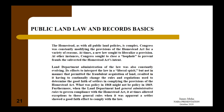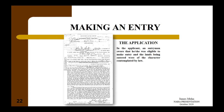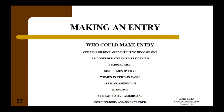In making an entry, the first thing an individual had to do was make an application, swearing that he or she was eligible and that the lands being entered were of the character contemplated by law. Who could make entry? You had to be a citizen or have declared intent to become one. Ex-Confederates were initially denied but later allowed. Married men of any age could make entry; single men had to be over 21. Women in certain cases could make entry, usually if single and over 21. African Americans, Hispanics, and certain Native Americans were permitted. Foreign-born Asians, however, were excluded because they could not become citizens.